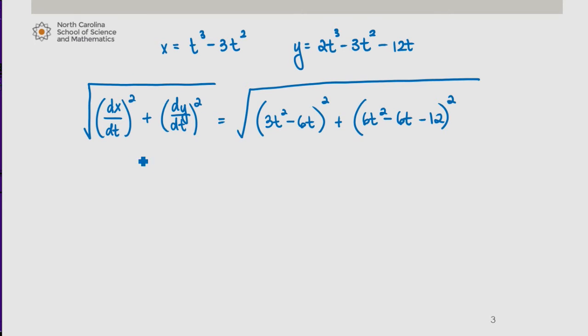Now, since this is the expression for speed and we want to know when the particle is at rest, that can be found by answering the question: when is this expression equal to zero? Because that means the speed of the particle is zero.